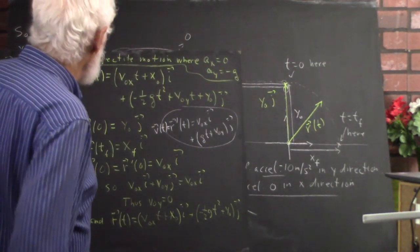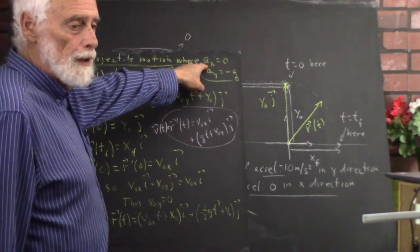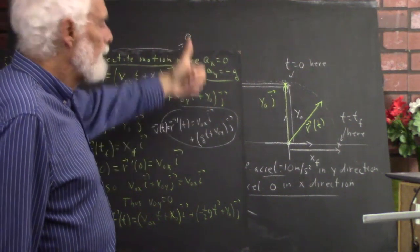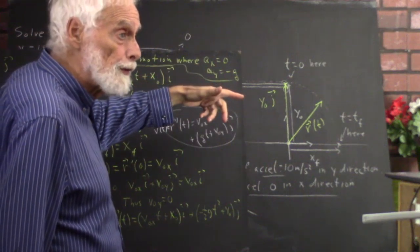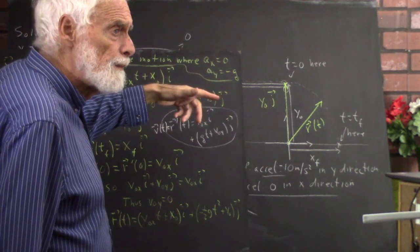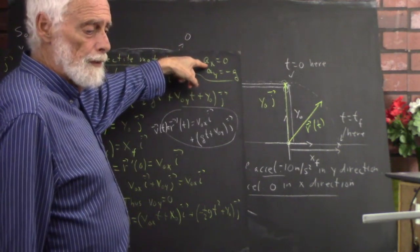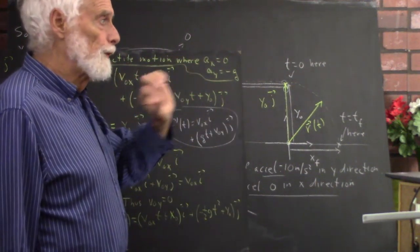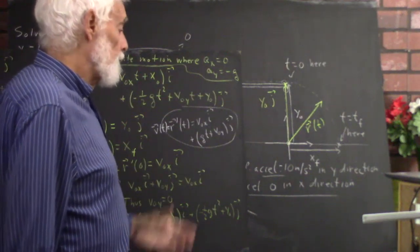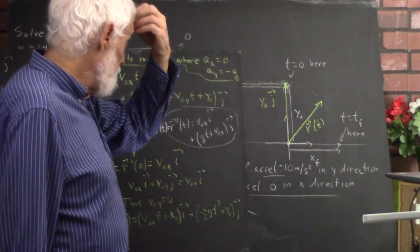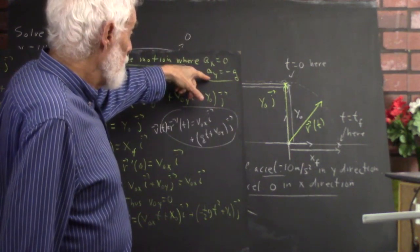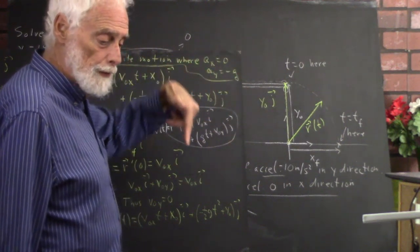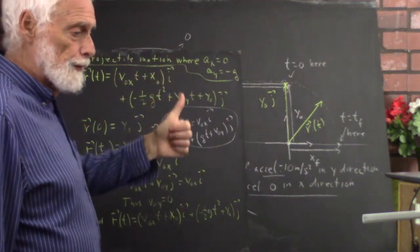In general, idealized projectile motion is set up with the x-acceleration equal to zero, with the y-axis vertical and x-axis horizontal. The x-acceleration is zero because we assume no significant air resistance, so there's nothing to exert a force in that direction. The y-acceleration is negative g, the acceleration of gravity, when the vertical axis is upward.